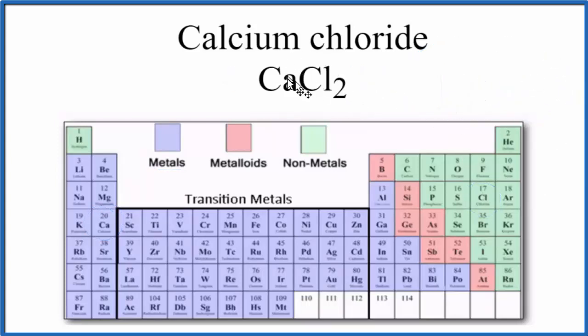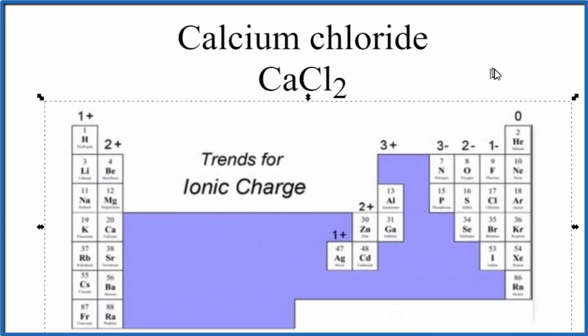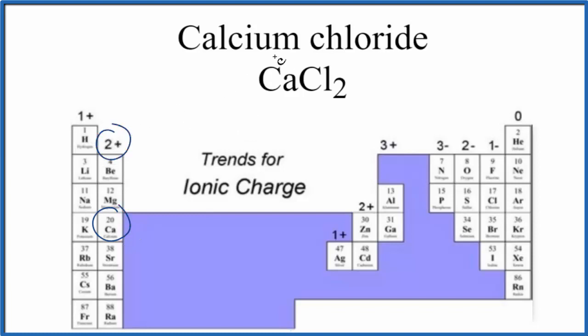You might ask why we have one calcium and two chlorine atoms. The reason is, we look at our periodic table here divided up by charge for each group. We can see the ionic charge on calcium, it's in group 2, is 2+. So calcium forms 2 plus ions.